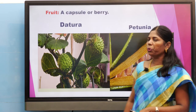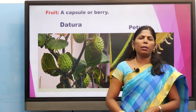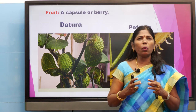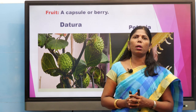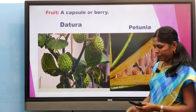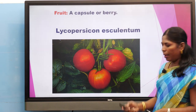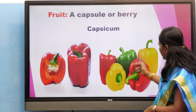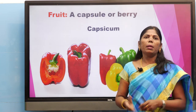The fruit may be a capsule or berry. Berry has fleshy pericarp with many seeds inside — examples are Datura and Petunia (capsule), Lycopersicon esculentum (berry), and Capsicum, which shows different colors in hybrid varieties with many seeds inside.